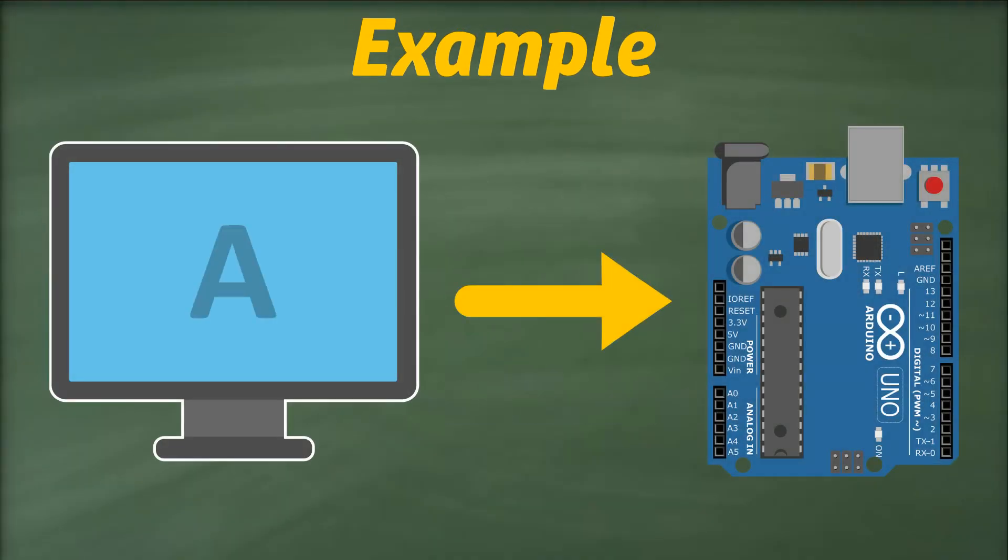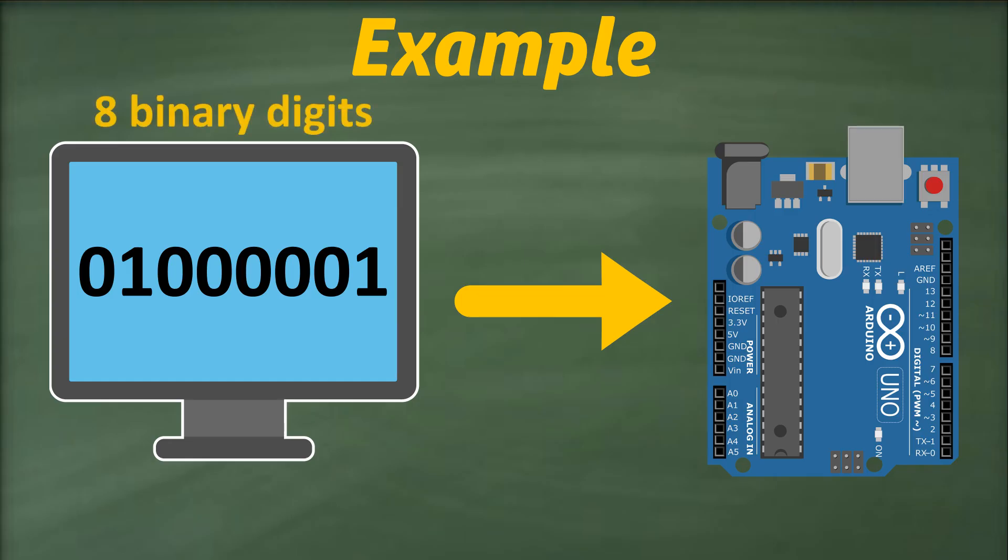Imagine we want to send a letter A from our computer to Arduino. First, this letter will be translated into binary digits, since computers solely understand binary data. We can see that the converted binary number has eight binary digits or bits. Now we have to somehow transmit these eight bits to our Arduino.